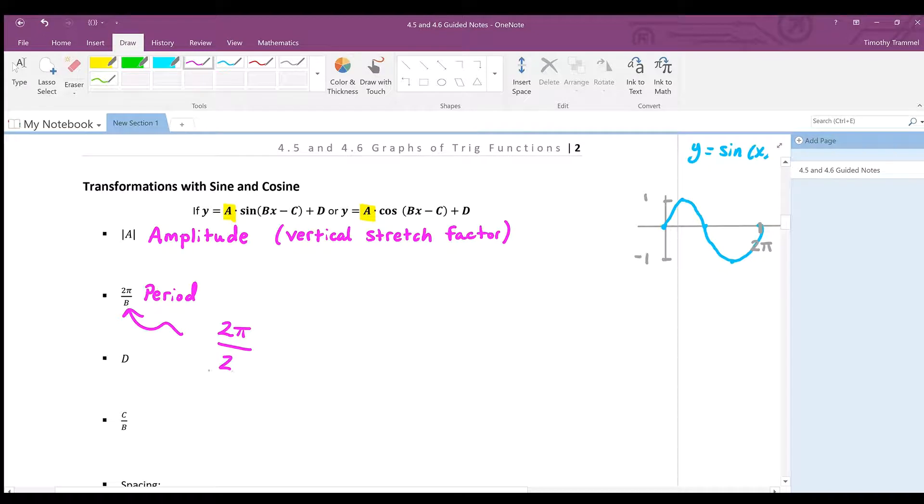Or if we put a 3 in front of the x, the 3 would go down here. Because now it's going to take a third of the time to complete one cycle. And so on. So there's the period.